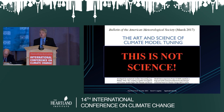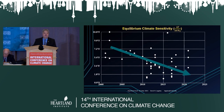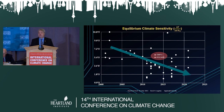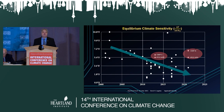Looking at equilibrium climate sensitivity estimates over time from independent assessments: back in the first and second IPCC assessments, estimates were somewhere between 5 and 9 degrees Fahrenheit. Over time these independent estimates have started to decrease. Unfortunately, both the models and the IPCC have not followed suit — the CMIP5, IPCC AR5, CMIP6, and IPCC AR6 are out here showing much higher values. Based upon independent assessments, they have not kept up with the times and are using an equilibrium climate sensitivity that is much greater than it should be.